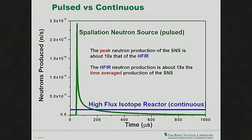We have two types of sources: pulse sources and continuous sources. Here at the SNS, this is a pulse source — if you plot time versus neutrons generated, you have a spike and then it decays off, so all your neutrons are generated in a very short time period. Because of that you can use time of flight: you measure how long it takes neutrons of different velocities to reach your sample and use that to distinguish their energies. The peak neutron production at the pulse source is nearly 10 times that of a reactor, which is a continuous source.